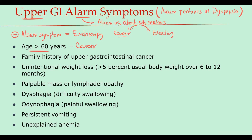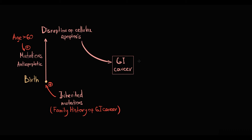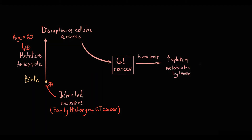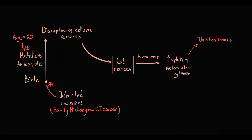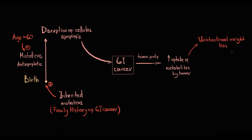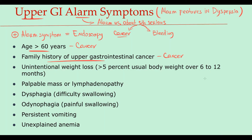That's why family history of GI cancer is the second alarm symptom. Obviously tumor growth occurs by rapid proliferation of malignant cells, and proliferation requires a lot of metabolites. The more metabolites a tumor consumes, the lesser amount of metabolites left for the organism. So patients with ongoing oncological malignancy unintentionally lose weight. According to current criteria, unintentional weight loss of more than 5% of usual body weight over 6–12 months is a direct indication for an endoscopy, because it's a characteristic feature of oncological malignancy.